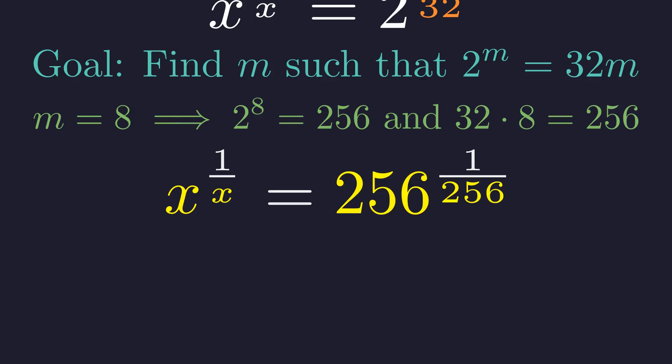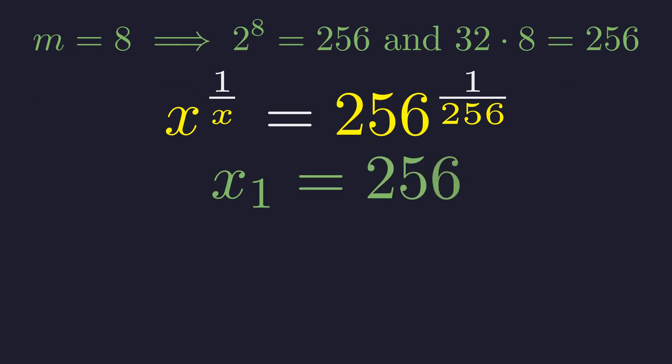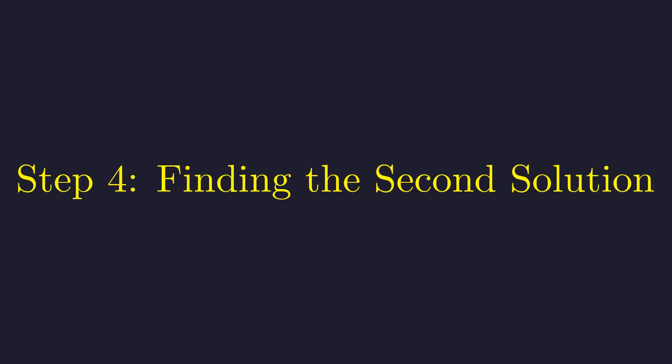The structure on both sides is identical. x to the 1 over x equals 256 to the 1 over 256. So one solution is simply x equals 256. We found the elegant integer solution. But how do we find the other one?